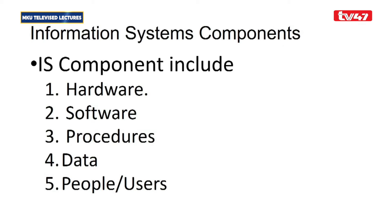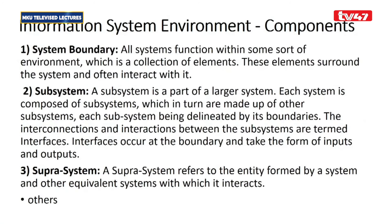The components of an information system — hardware, software, procedures, data, and people — were covered in previous units. The information system environment includes the system boundary, which defines scope; the subsystem, which are the parts making up the system; and the supra system, which refers to the entity formed by a system and another equivalent system it interacts with.